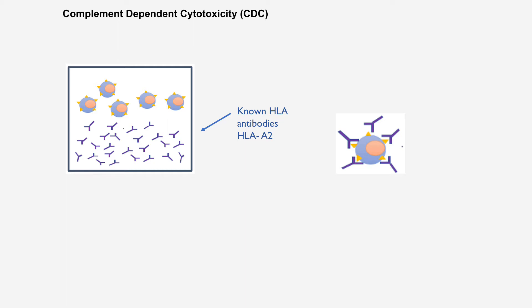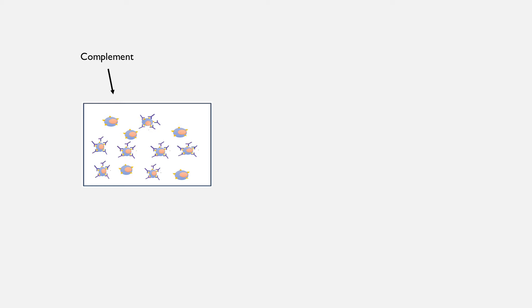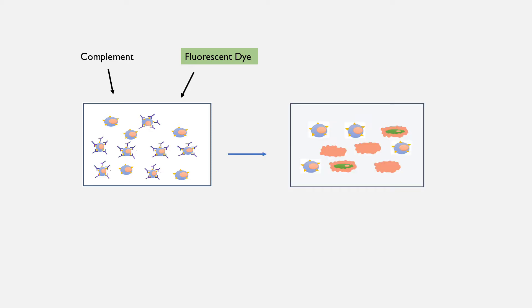Suppose we have HLA antibodies to HLA A2 molecule in this medium and we want to know if a person has HLA A2 antigens on their cell surface. We add lymphocytes of that person to this medium. If those lymphocytes have HLA A2 antigens on their cell surface, the antibodies present in the medium will bind to these antigens. Then we add complement, which results in complement dependent cytotoxicity, causing damage to cell membranes and lysis of these cells. We then add a fluorescent dye that passes through damaged membranes and stains dead cells. A positive reaction occurs if there is a significant number of stained cells, confirming the person had HLA A2 antigens on their lymphocytes.